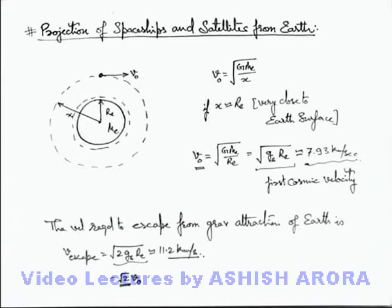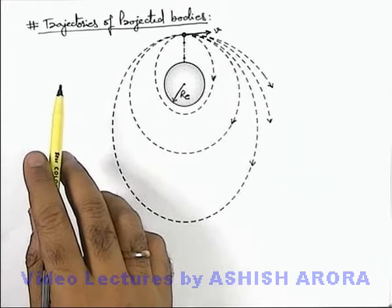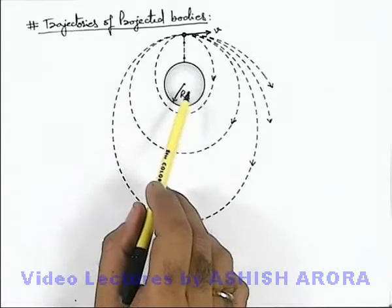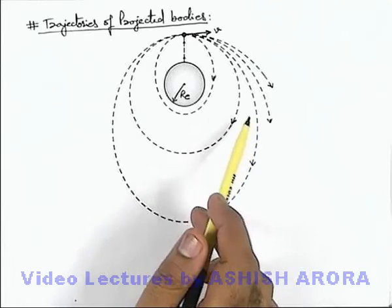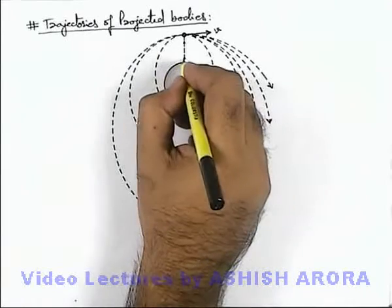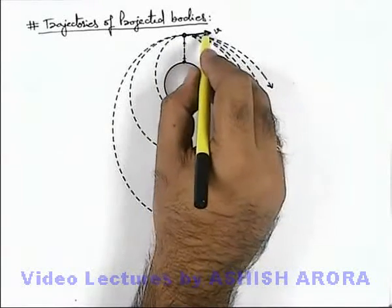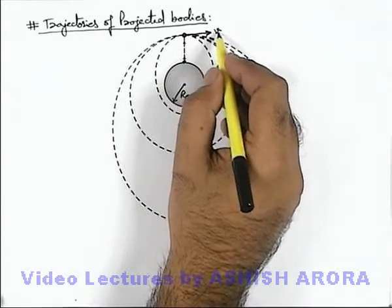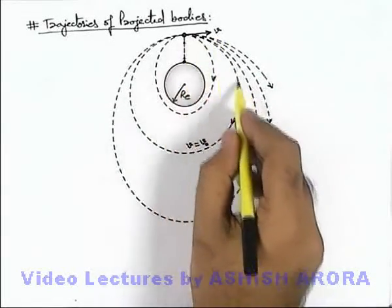On the next slide we'll discuss different types of trajectories which are possible when a body is projected from a point in the surrounding of Earth. Here, this Earth and various dotted paths show various kinds of trajectories depending on the projection speed. From Earth's surface a body is taken to a position in space and is tangentially thrown with speed v. If the projection speed equals the orbital speed, the body will follow a circular path.